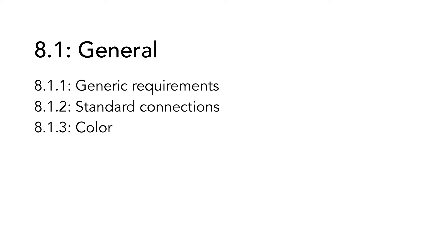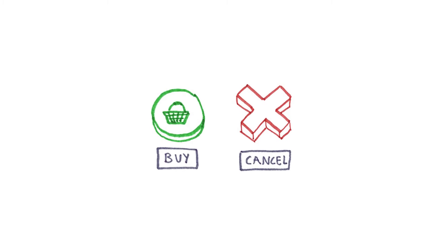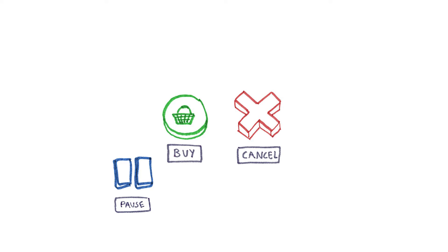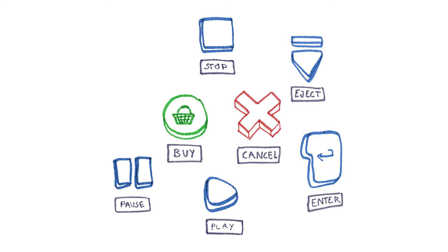The third part has to do with color. Since not all users can differentiate between all colors, the hardware must use more than only color to inform the user. For example, if a green button means buy and a red button means cancel, the difference between them must be possible to understand even if the user is colorblind. One way of doing this is by describing the difference in text, or using different shapes and sizes of the buttons.